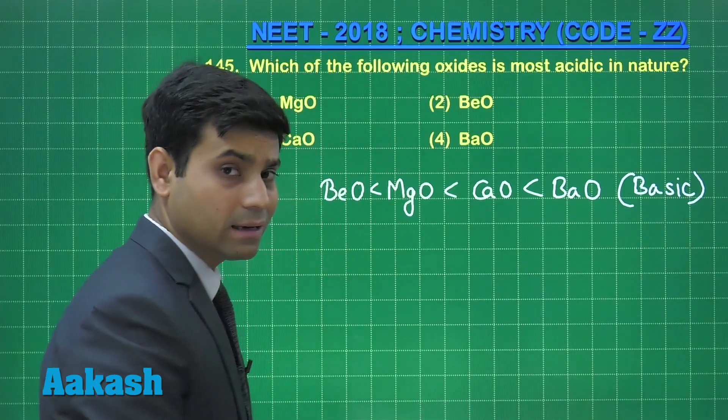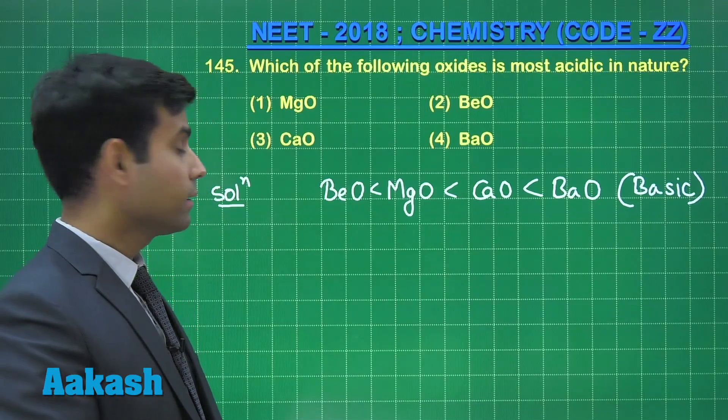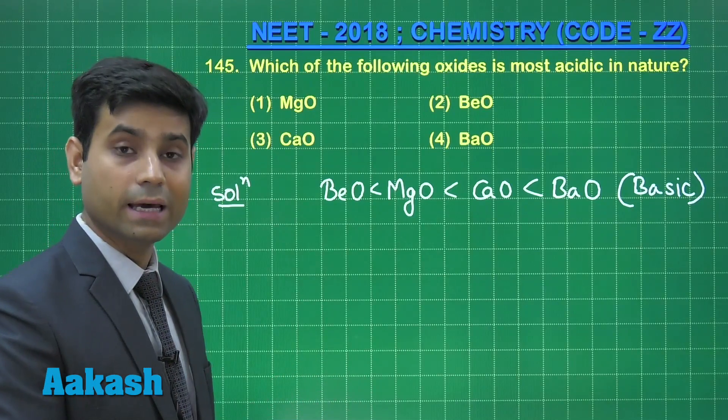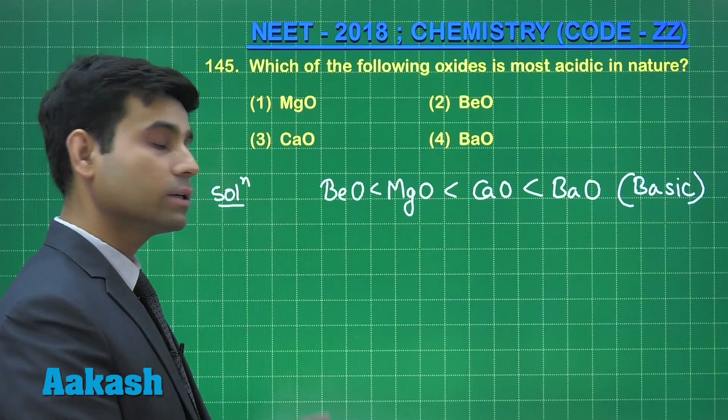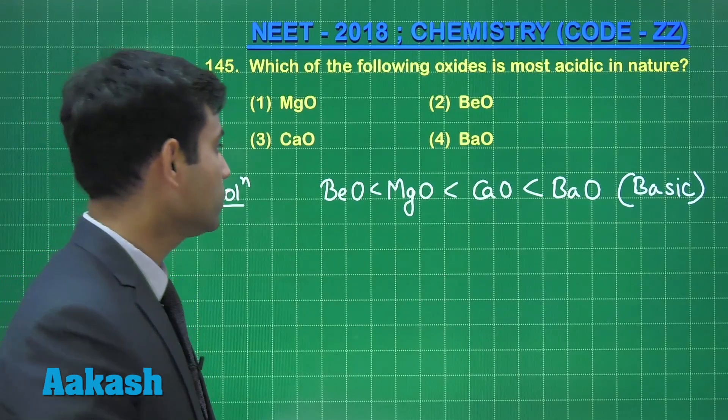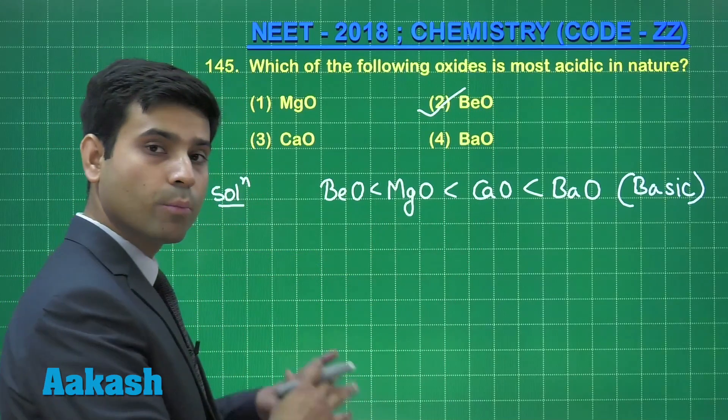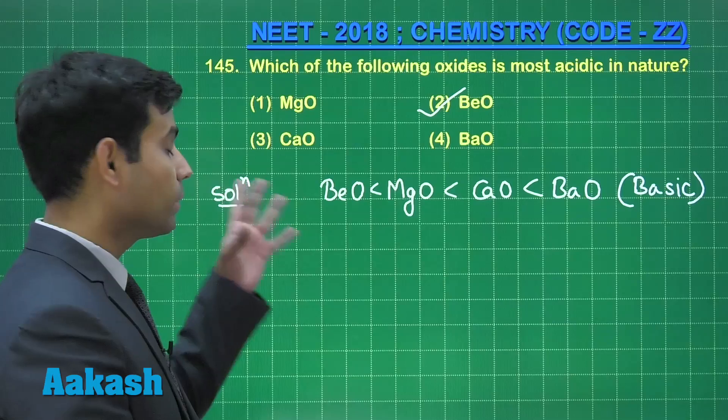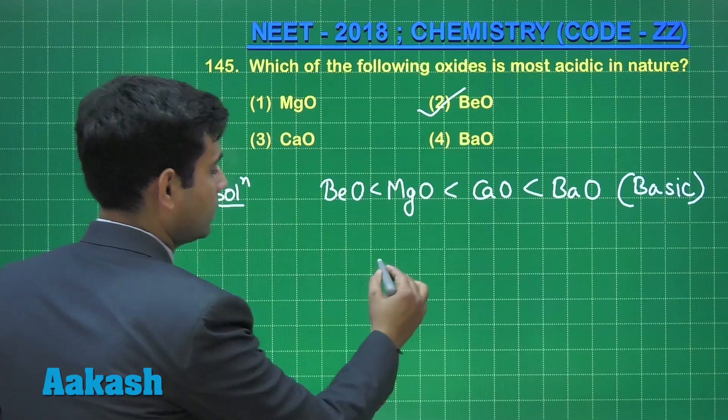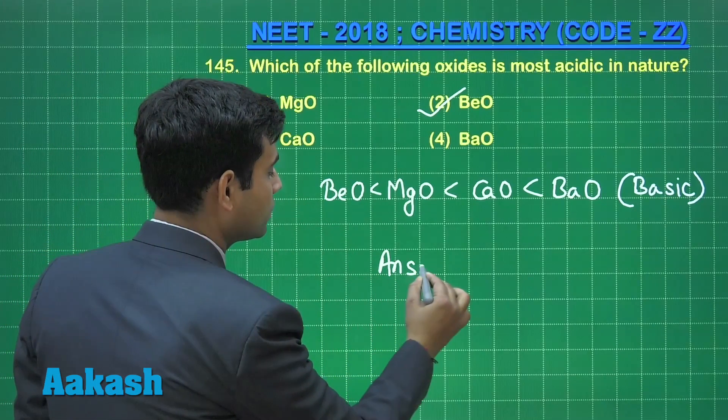So definitely the acidic character would be in reverse order. Hence the correct answer for this question will be option 2, that is beryllium oxide which is most acidic oxide among these four oxides. Answer is option 2.